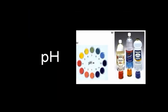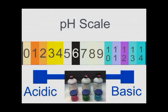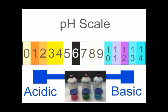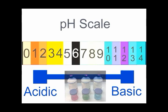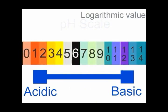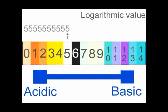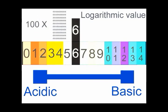pH is a term used to indicate the alkalinity or acidity of a substance as ranked on a logarithmic scale from 1.0 to 14.0. Acidity increases as the pH gets lower. High pH is considered alkaline or basic. The term logarithmic means the difference between two whole values is tenfold. For example, a pH of 5 would be ten times more acidic than a pH of 6, and a pH of 4 would be 100 times more acidic than a pH of 6.